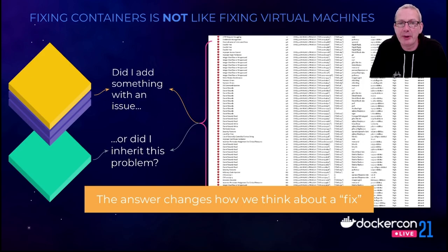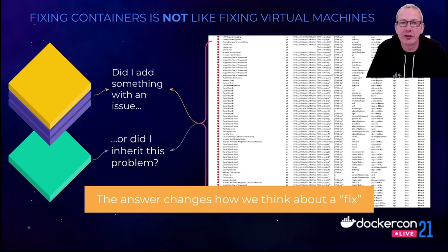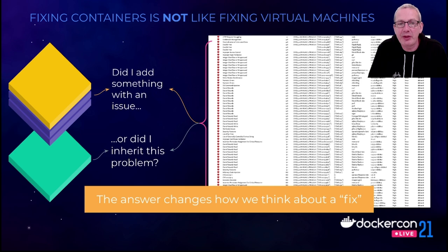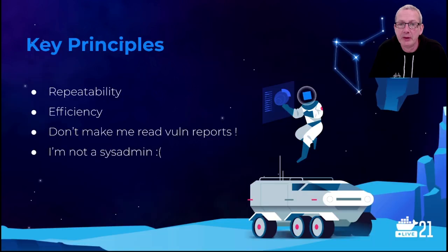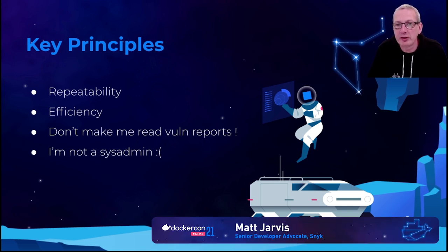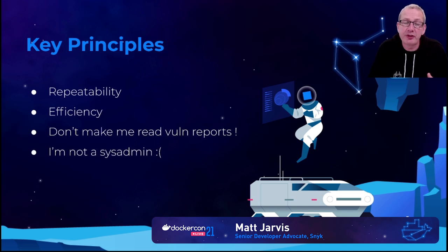Faced with this, many of us will just freeze like a rabbit in headlights when we get presented with a big list like that, particularly if our focus is on application development and not system administration. What are we supposed to do with this information, and where do we start? I just wanted an image to run my node application in and already I'm facing this gigantic task to make it secure.